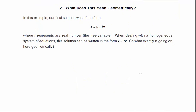So what's actually going on? In this example, our final form was x equals p plus tv, where t is our free variable. If we're dealing with a homogeneous system, it would have instead been written as x equals tv, rather than p plus tv.